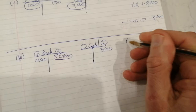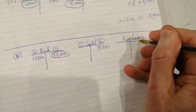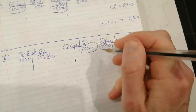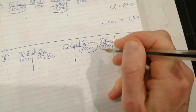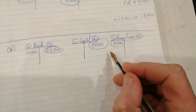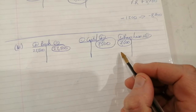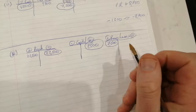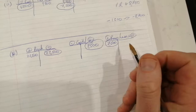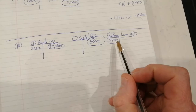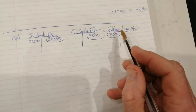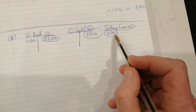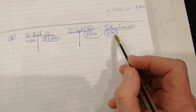So the entries are: purchases up by 7,500 and capital up by 7,500 - that's all that should have happened. To explain further: there are different ways to purchase stock - on credit (purchases up, creditors up), for cash (purchases up, bank down), or in this case by contributing capital. So purchases goes up and capital goes up because the business now owes more to the owner for the stock received.